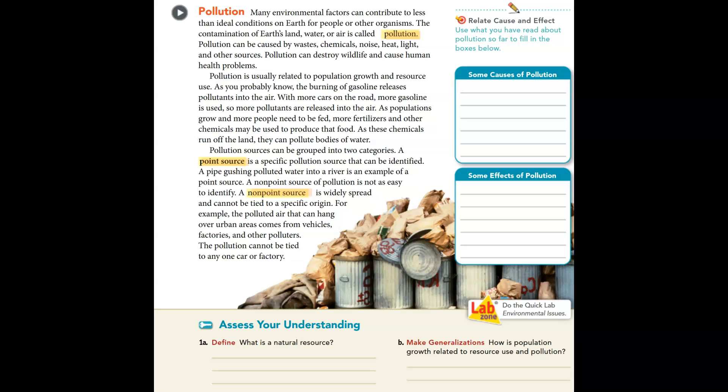What is a natural resource? A natural resource is anything that occurs naturally in the environment and is used by people. How is population growth related to resource use and pollution? If population grows, the amount of resources people use will grow and more pollution will be caused. More people means more cars, which are made from resources and use gas, and more cars on the road means more pollution in the air.